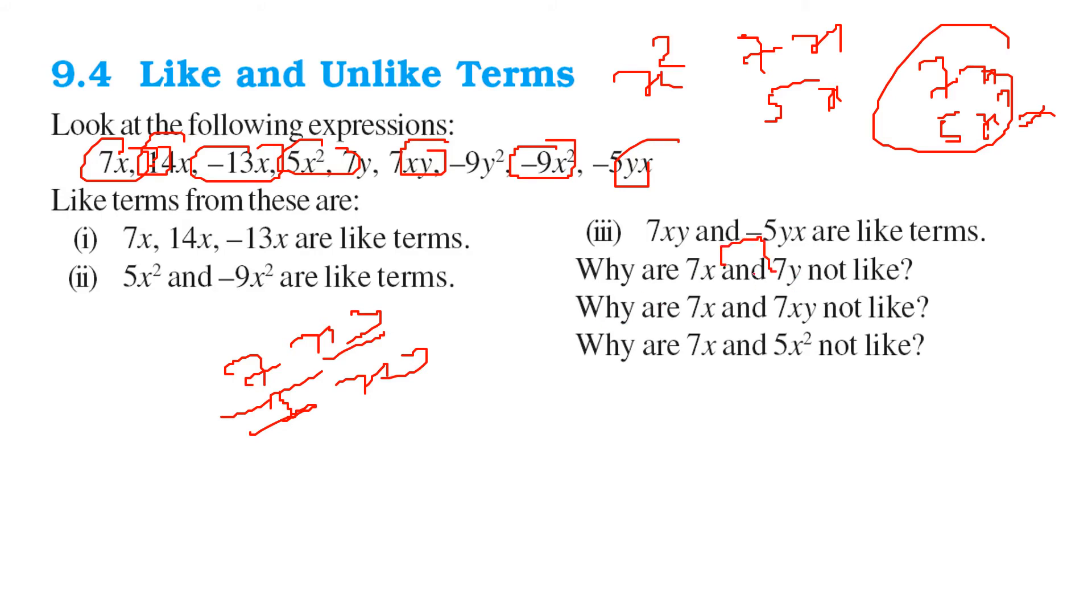7x and 7y are not like terms because we have x here, but we have y here. These two are not like terms. 7x and 5x square, they are not like terms.